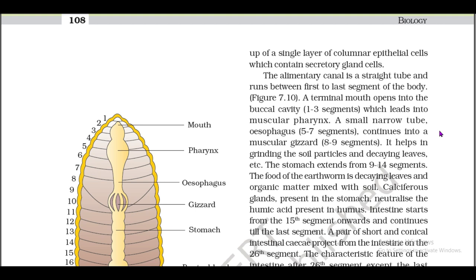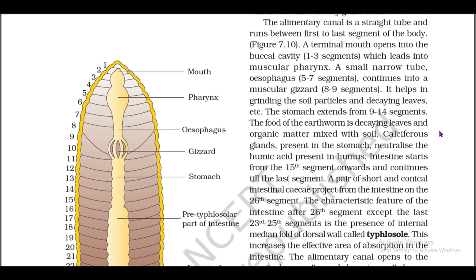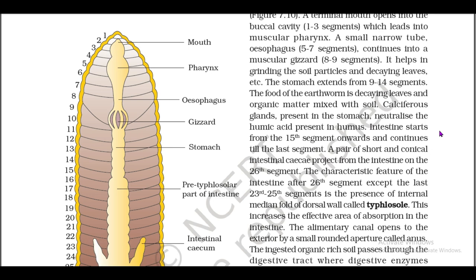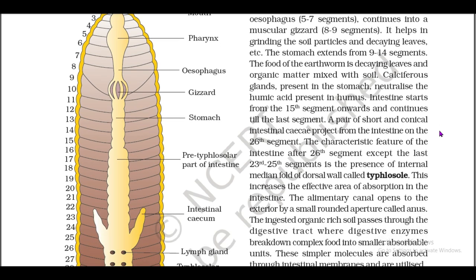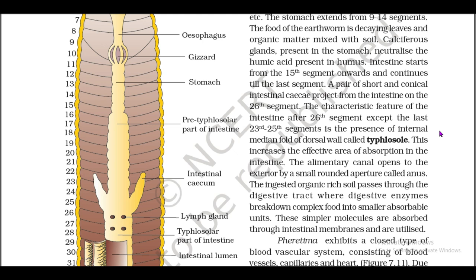The buccal cavity leads into a muscular pharynx. A small narrow tube, the esophagus (segments 5 to 7), continues into a muscular gizzard (segments 8 to 9), which helps in grinding soil particles and decaying leaves. The stomach extends from segments 9 to 14. The food of the earthworm is decaying leaves and organic matter mixed with soil. Calciferous glands present in the stomach neutralize the humic acid present in the humus. The intestine starts from segment 15 onwards and continues till the last segment.